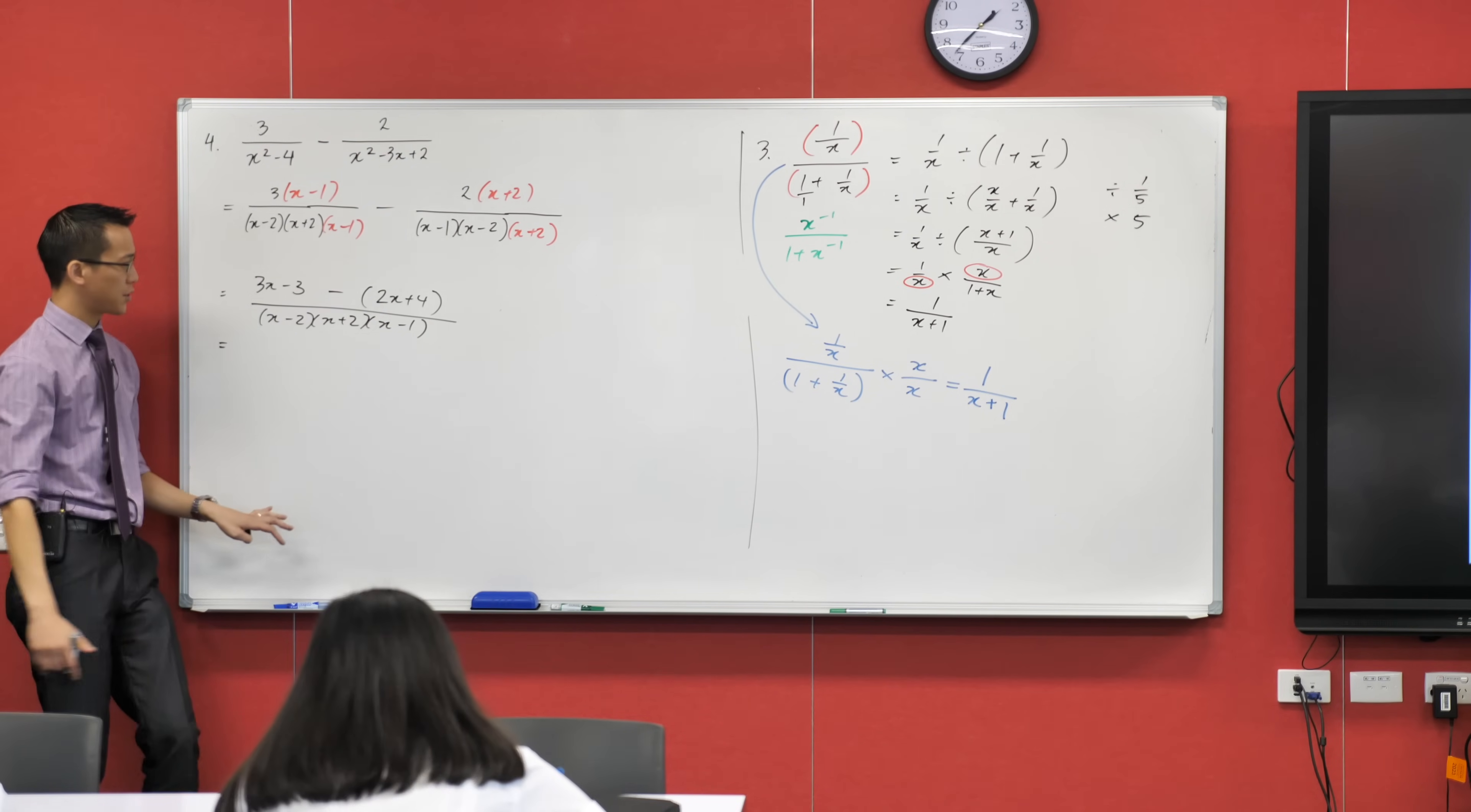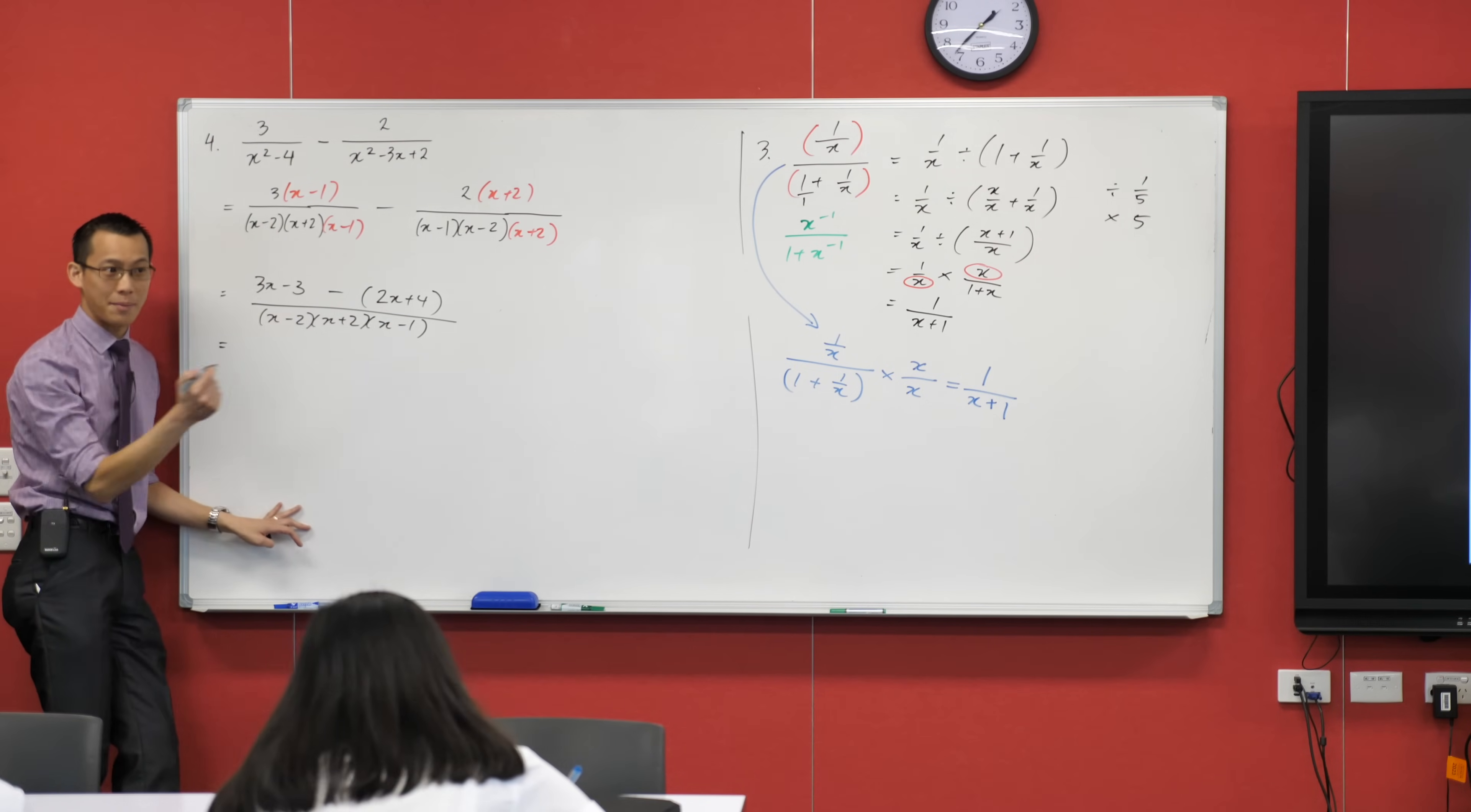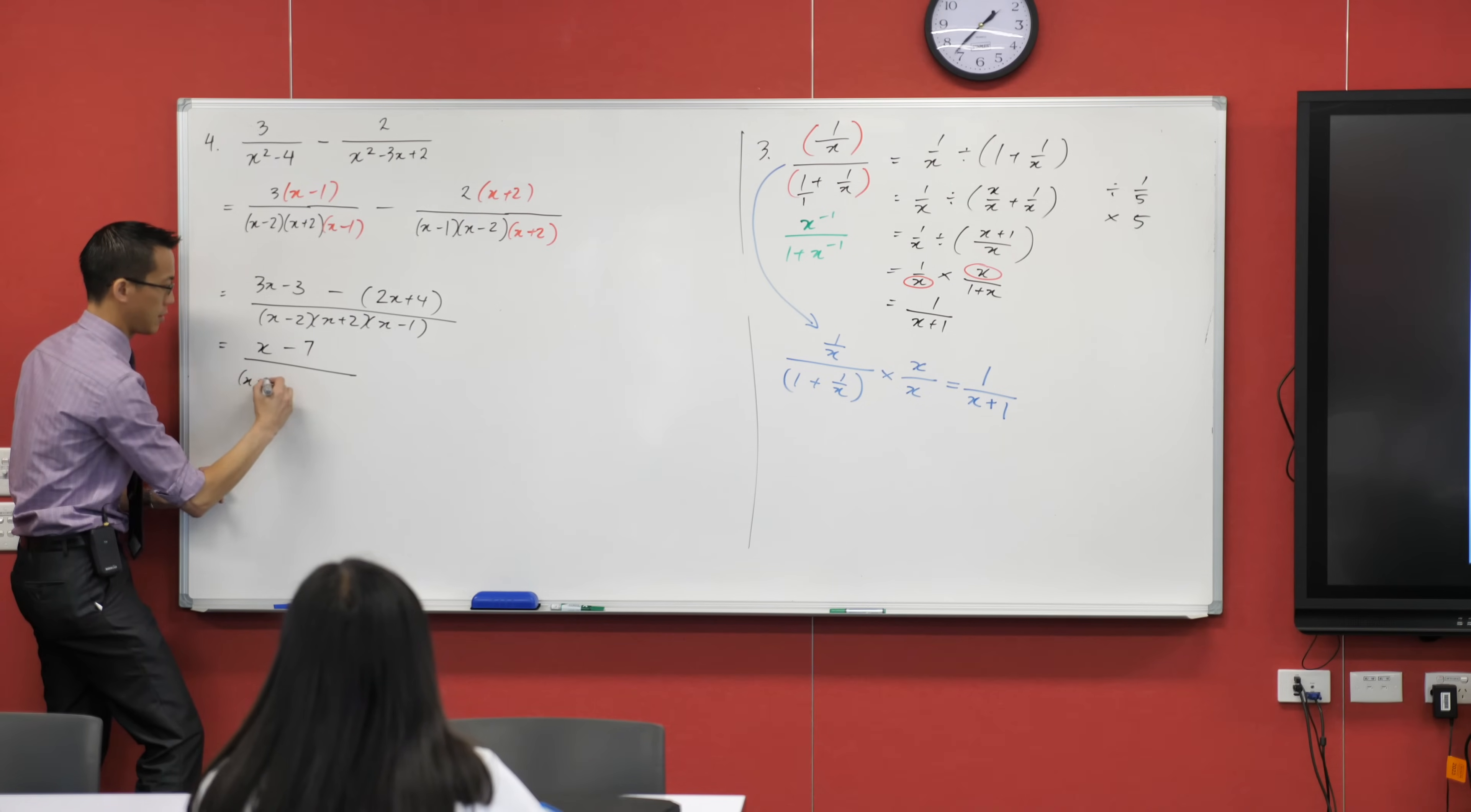Once you take care of the top, that becomes minus 2x minus 4. Collect your like terms. How many x terms are left on the top? Just a single x? Minus 7. Minus 7. Thank you very much. And then all of this is left hanging out there.